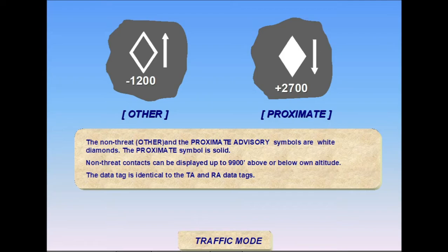Proximate traffic represents non-threat traffic within 6 miles of your own aircraft and is displayed concurrently with TAs and RAs to improve situational awareness. PAs are solid diamonds to increase visibility.